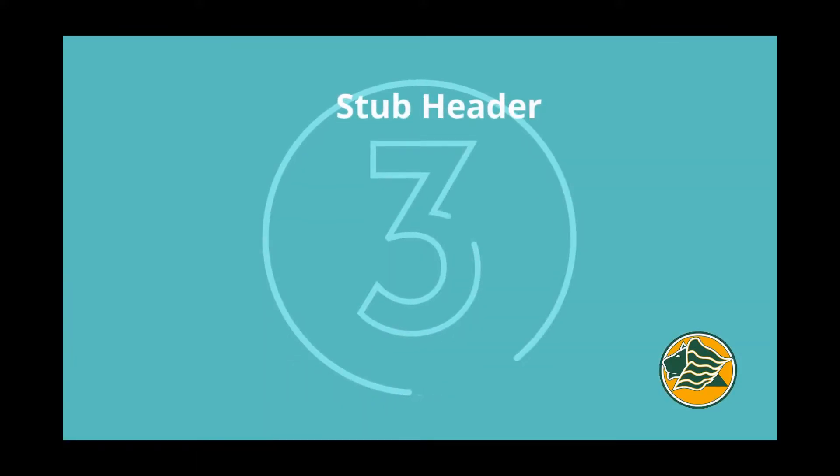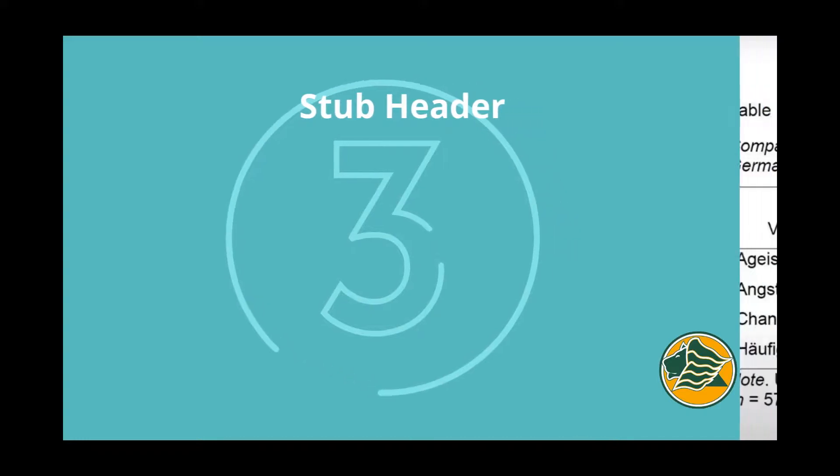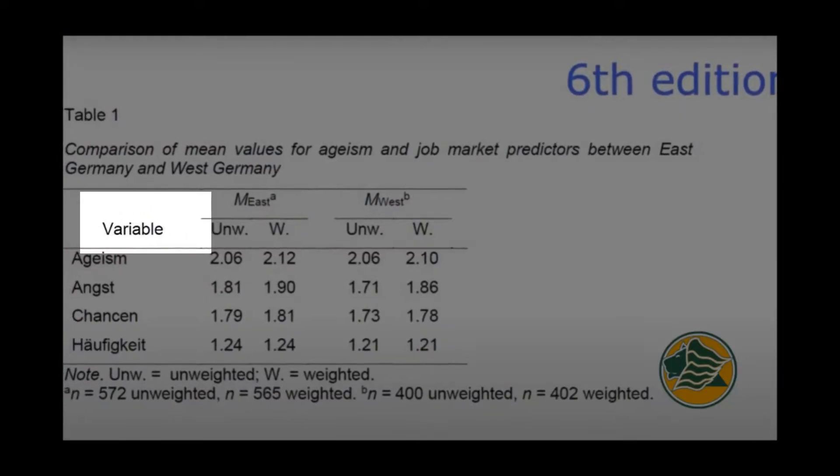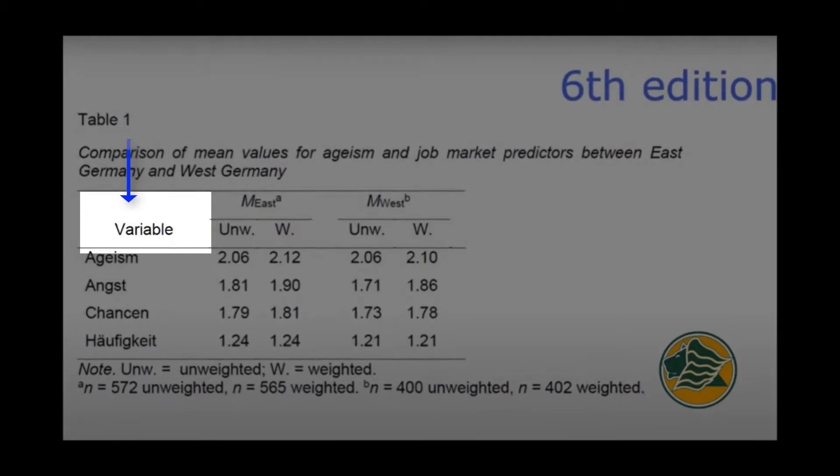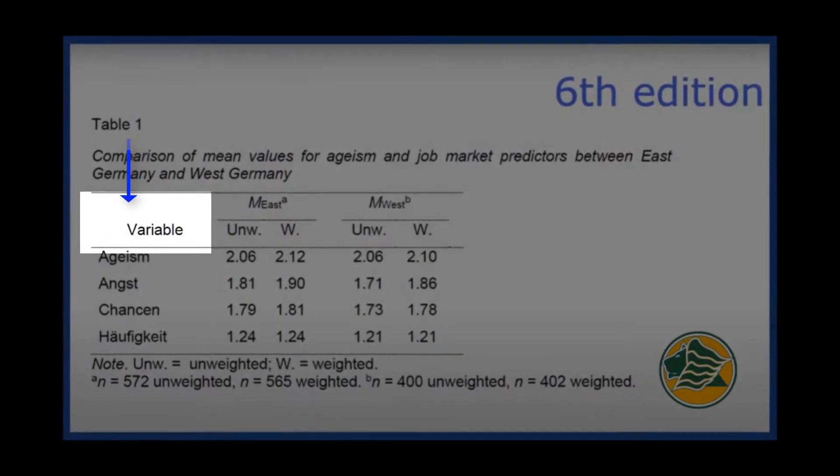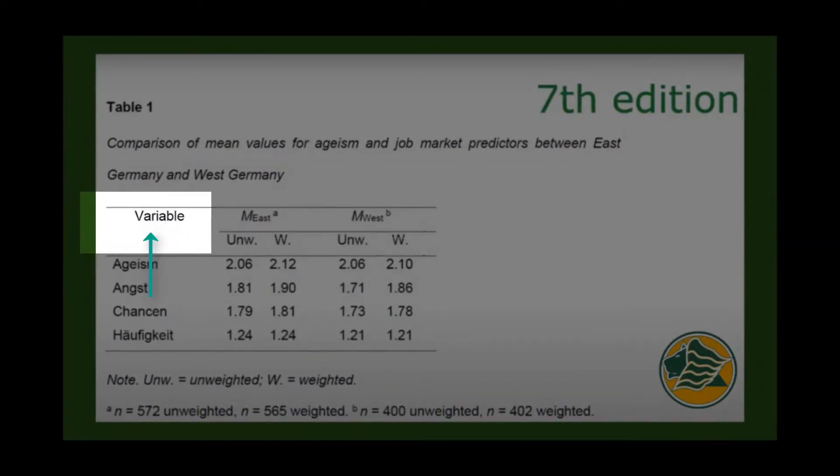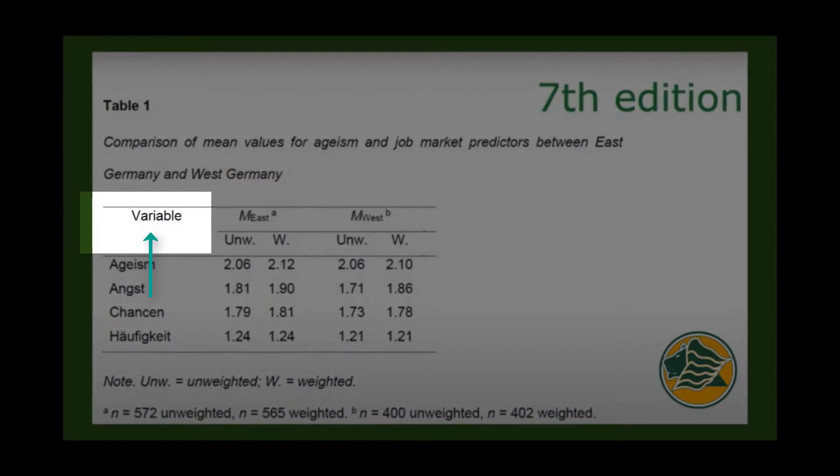The third change is the stub header. The stub header appears in the top hand left corner. In APA 6, the stub header is down here. In APA 7, the vertical orientation changes. It is at the top of the cell.